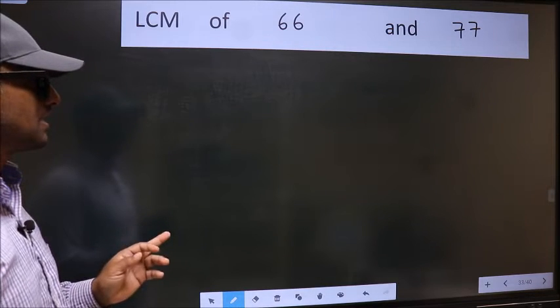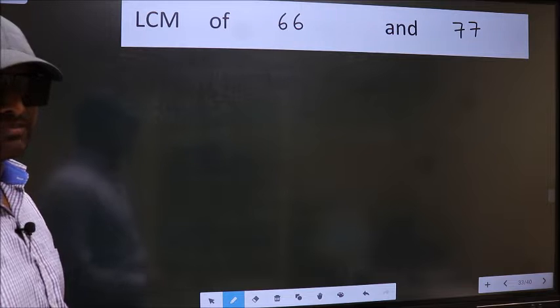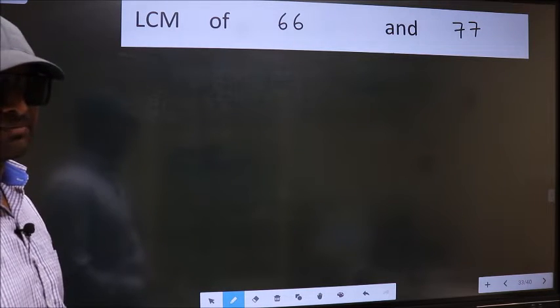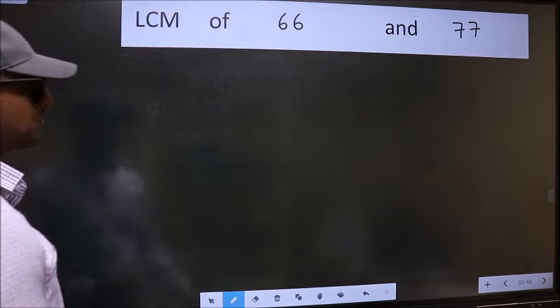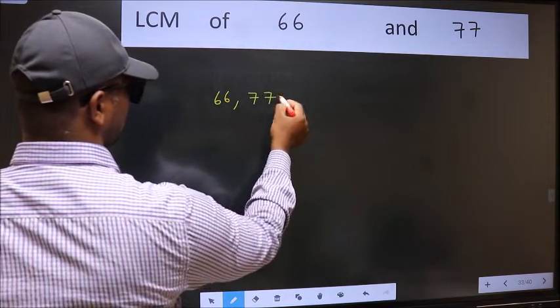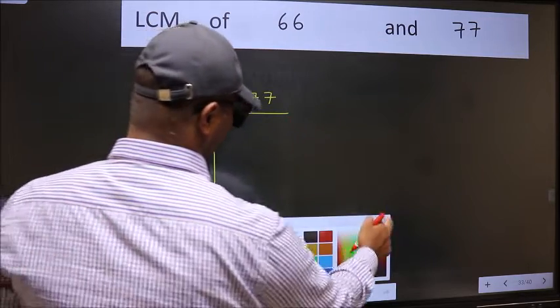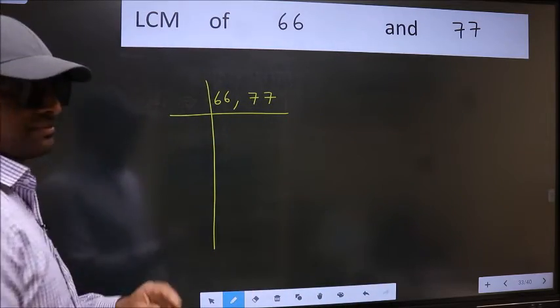LCM of 66 and 77. To find the LCM, we should frame it in this way: 66, 77. This is your step 1.